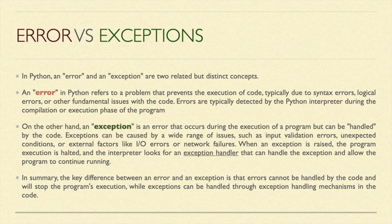On the other hand, an exception is an error that occurs during the execution of a program but can be handled by the code. This is the key distinction — we can handle exceptions in the program using some logic. Exceptions can be caused by a wide range of issues such as input validation, unexpected conditions, or internal factors like input-output errors or network failures.